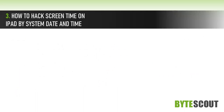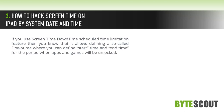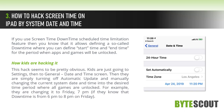How to hack screen time on iPad by changing the system date and time. This hack seems to be pretty obvious. Kids are just going to Settings, then to General, then the Date and Time screen. They simply turn off automatic update and manually change the current system date and time to a time period where all games are unlocked.